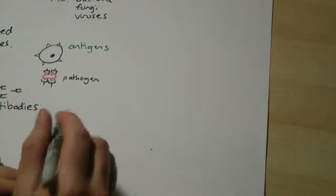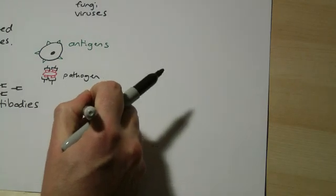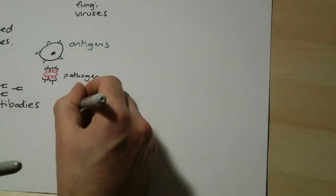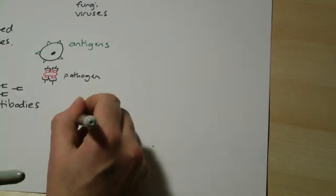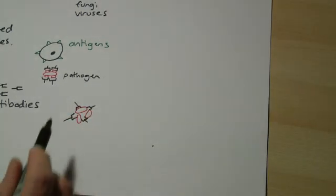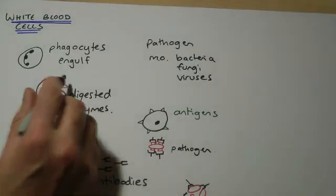Some of them can also stick together pathogens into big clumps, and this makes it easier for these white blood cells, the engulfing ones, to grab them. They're in a big lump and it's much easier for them to be grabbed.